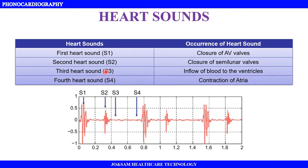The third heart sound, S3, is produced when the atrioventricular valves cause blood to rush into the ventricle. The fourth heart sound, S4, is produced by the contraction of the atria. We can see the waveform here. S1 and S2 are always visible on both sides, but S3 and S4 are not always clear — S3 and S4 are clear in children but not clearly seen in adults.